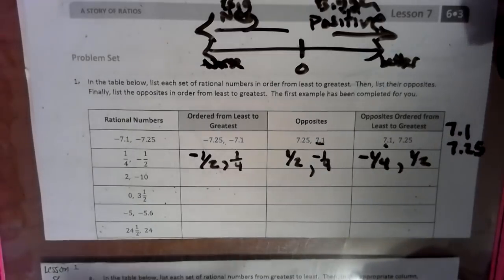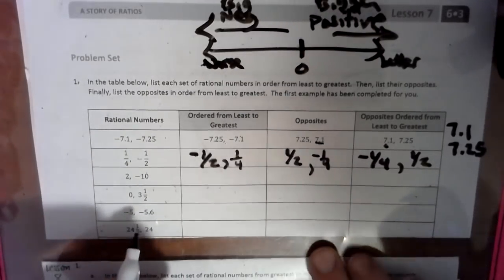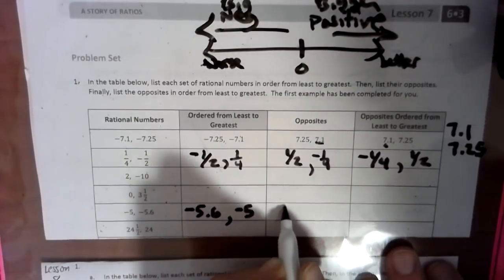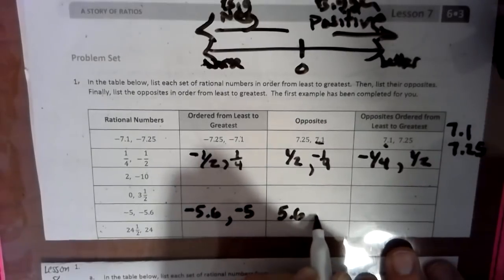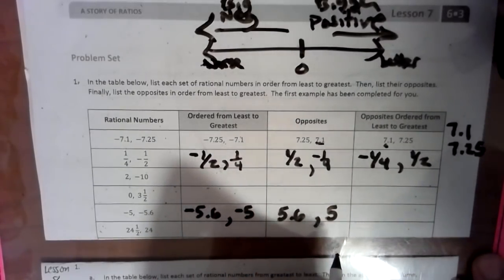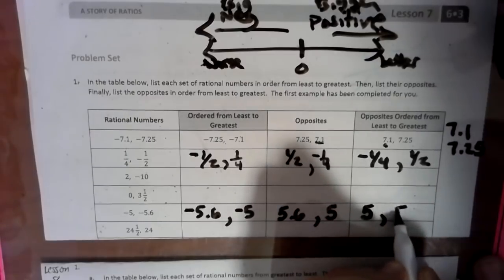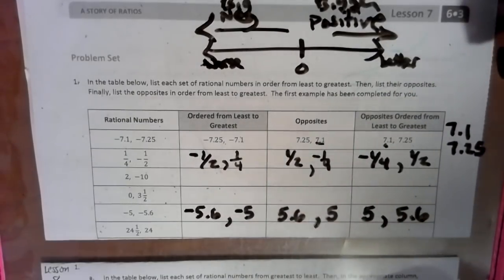Looking at this next one — we have two negatives. Negative five and six tenths is a much bigger negative, so it goes first. Then negative five. If we change these to their positives, we'll have them in order from least to greatest — the five is smaller than the five and six tenths.